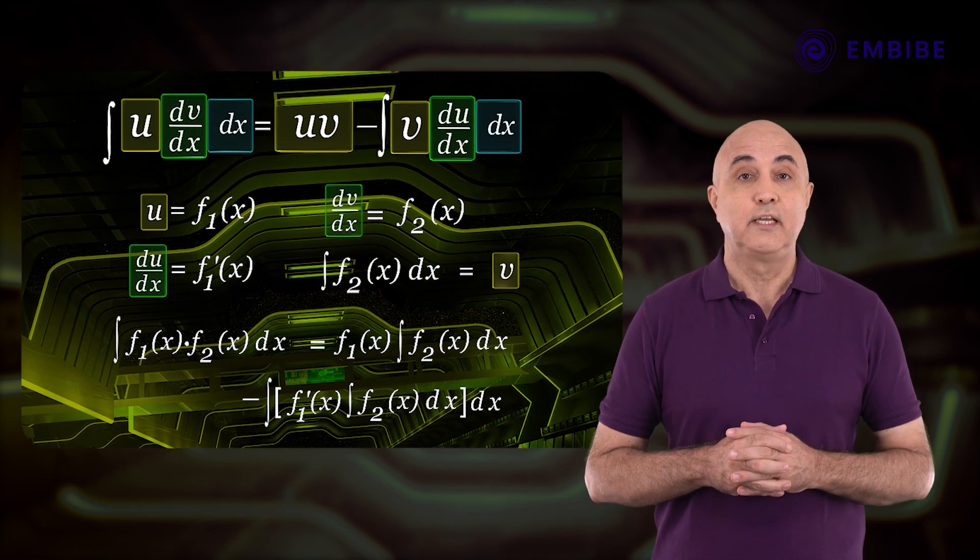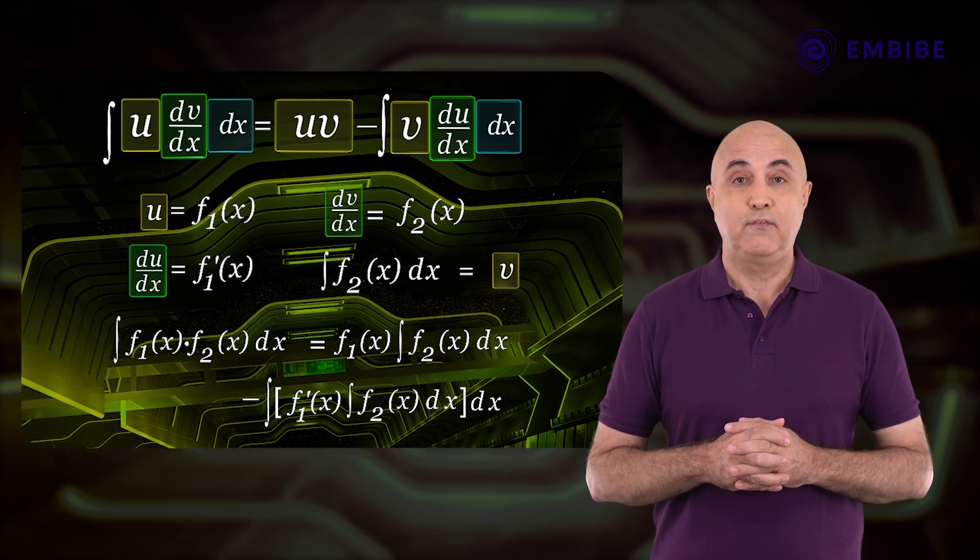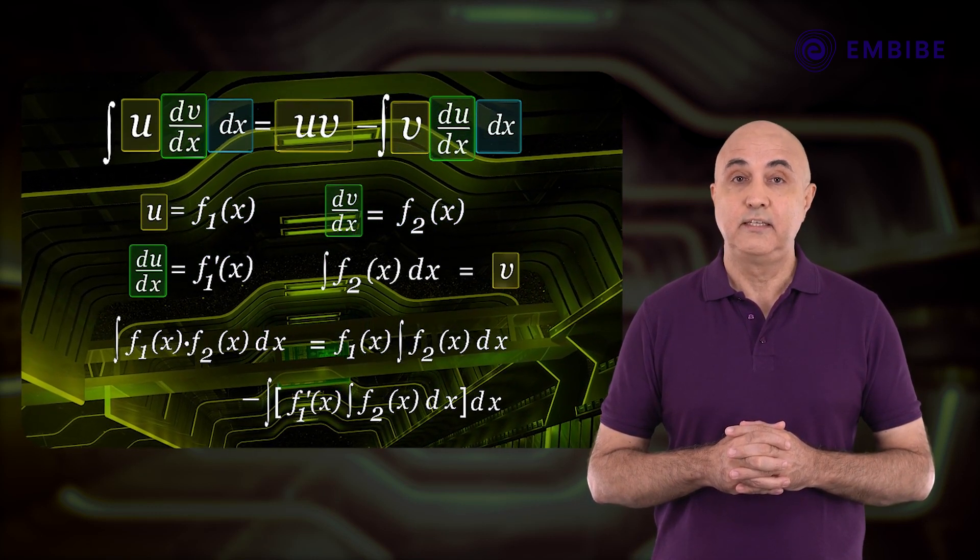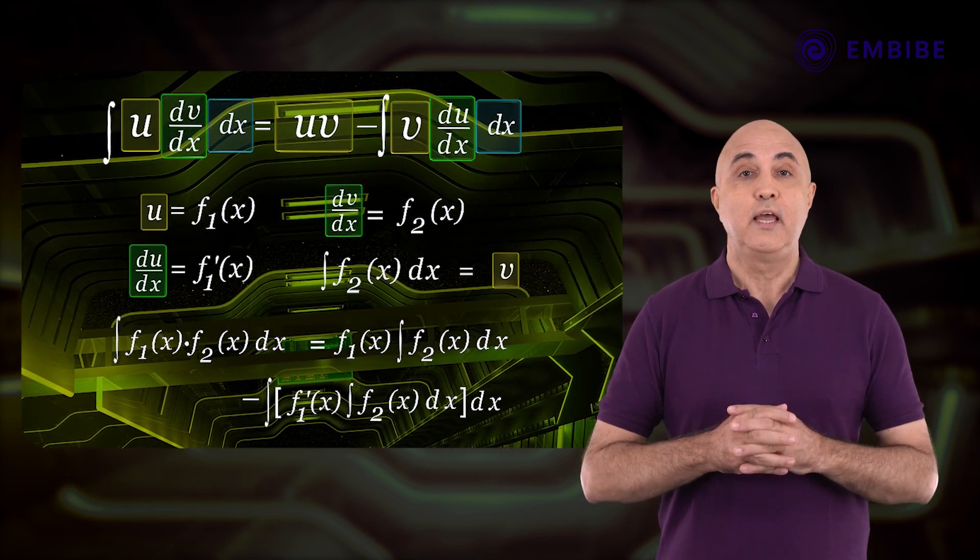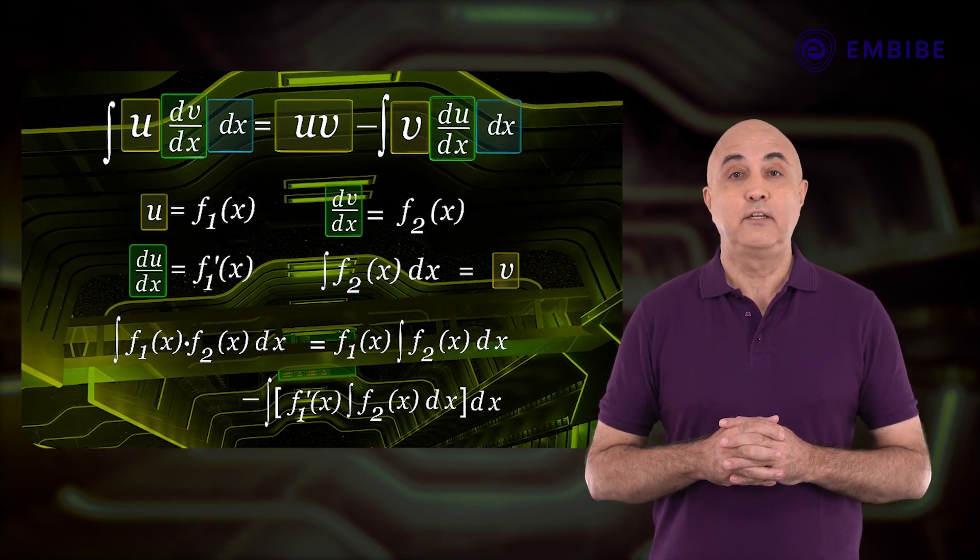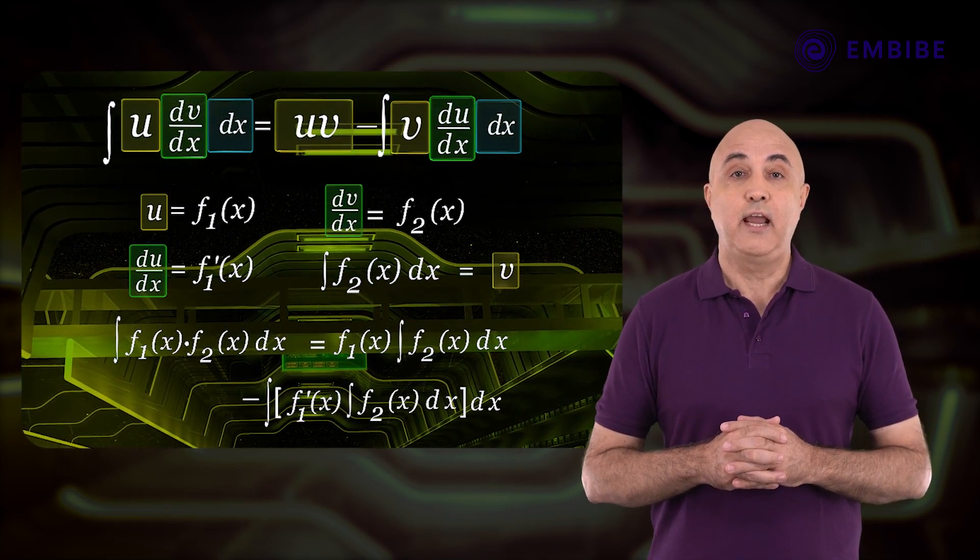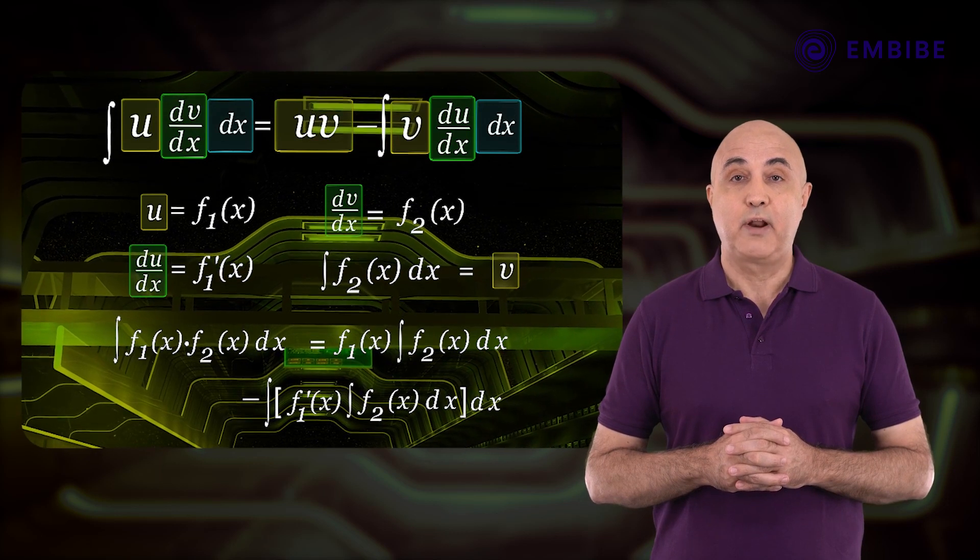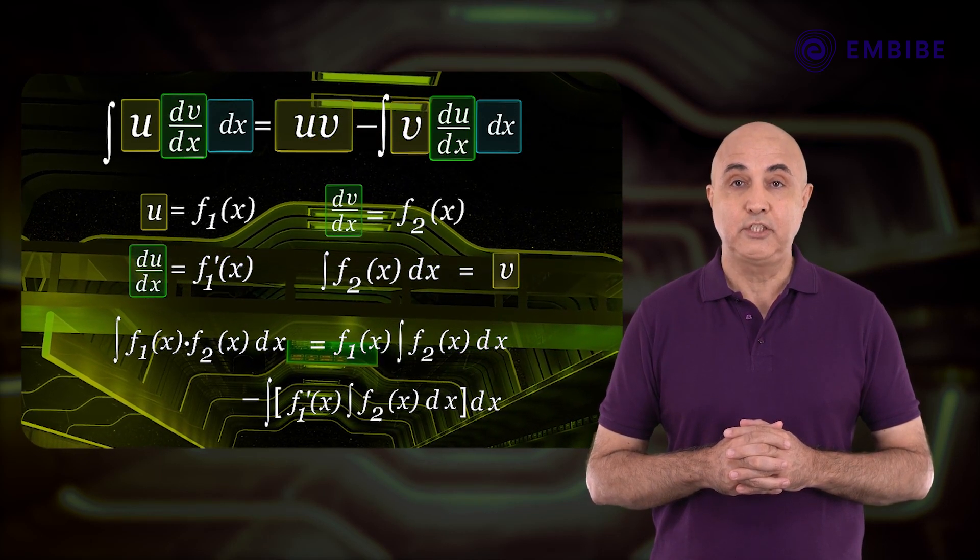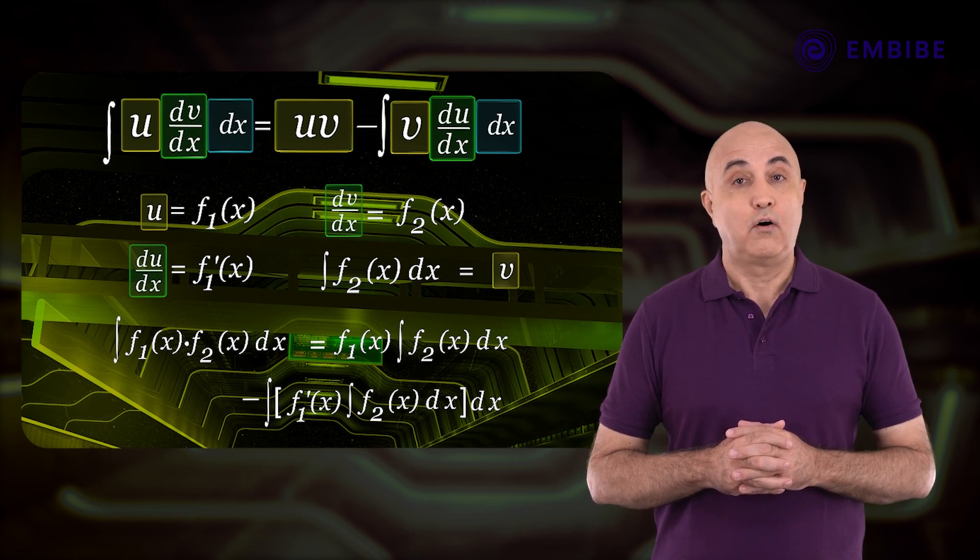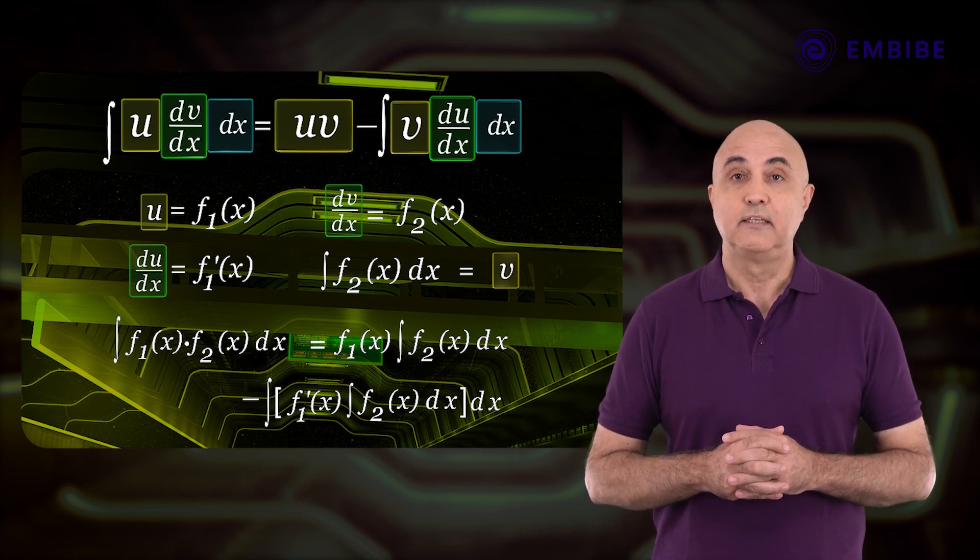Integral of f1 of x f2 of x dx is equal to f1 of x integral of f2 of x dx minus integral of, in brackets, f1 dash of x integral of f2 of x dx dx.